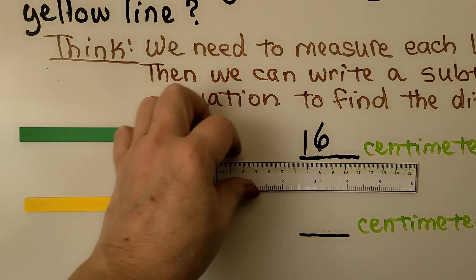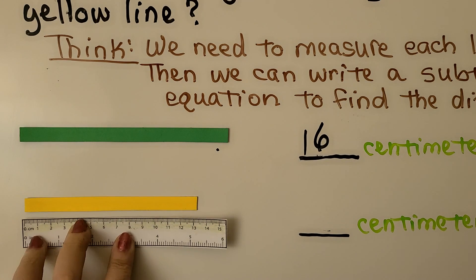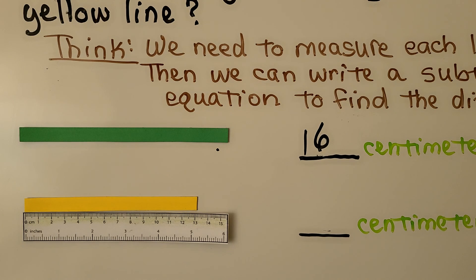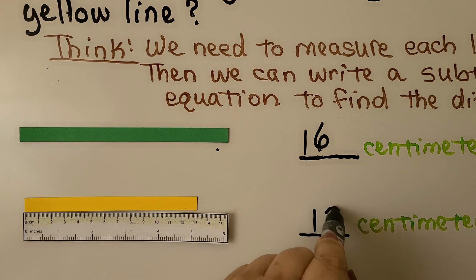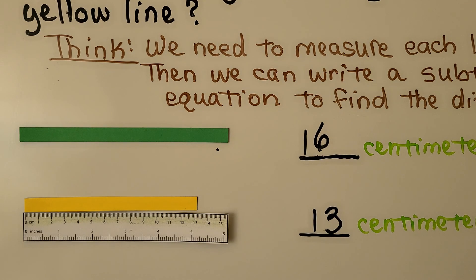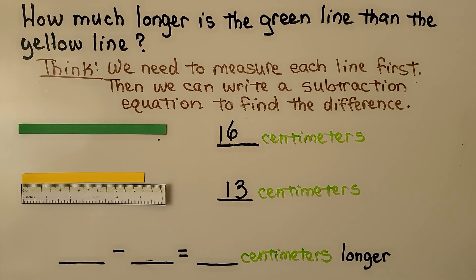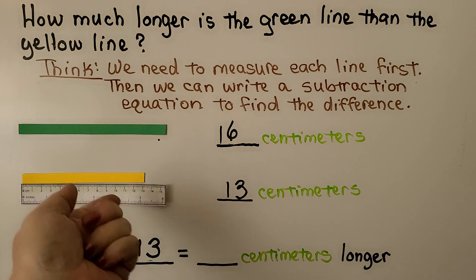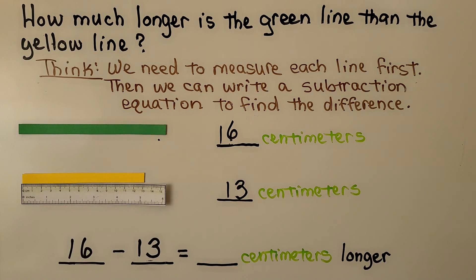Now we measure the yellow line. We line up the edge of the ruler with the zero mark, and it's at 13 centimeters. To find the difference, we do 16 minus 13. We can start at 13 and count on to 16: 13, 14, 15, 16 — that's 3. We know the green line is 3 centimeters longer than the yellow line.